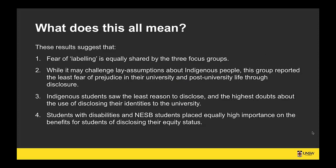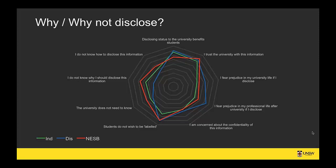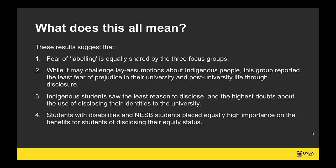Taken together, the findings so far suggest that the fear of labelling is equally shared by the three focus groups, though there is a difference with Indigenous students. Indigenous students saw the least reason to disclose and had the highest doubts about the value of disclosing to the university. This all suggests that disclosure doesn't simply happen — it involves thoughts about the value of disclosure, the effort, privacy and confidentiality, and what they're going to get for giving out their information.